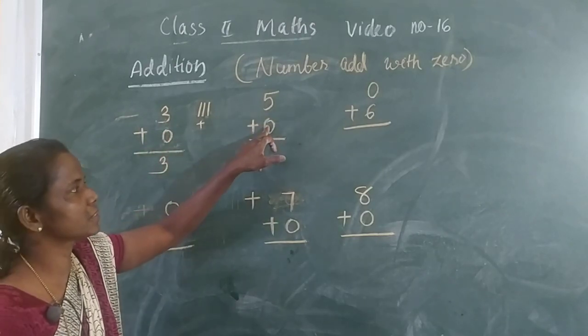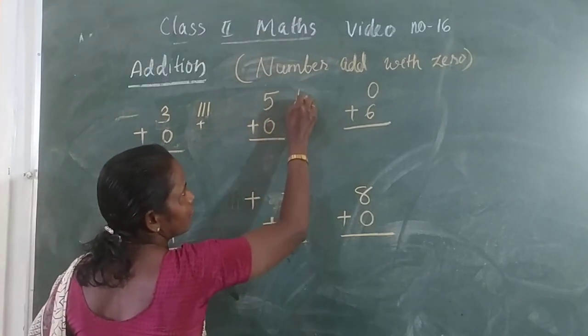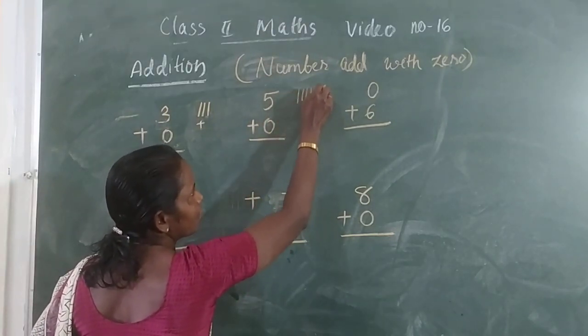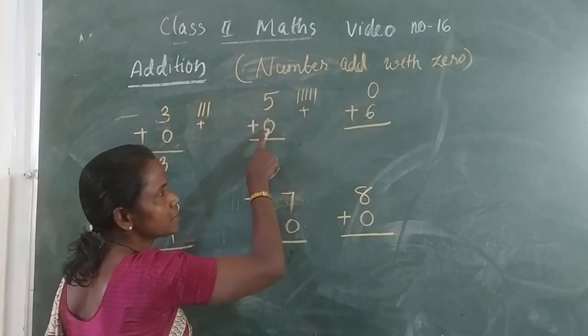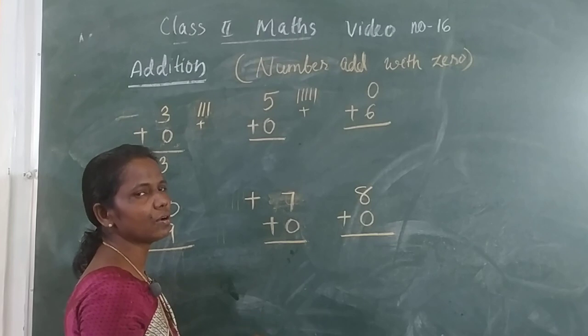Then look at 5 plus 0, how many lines? 5. 1, 2, 3, 4, 5. Plus how many lines? 0 lines. 0 lines means no lines.